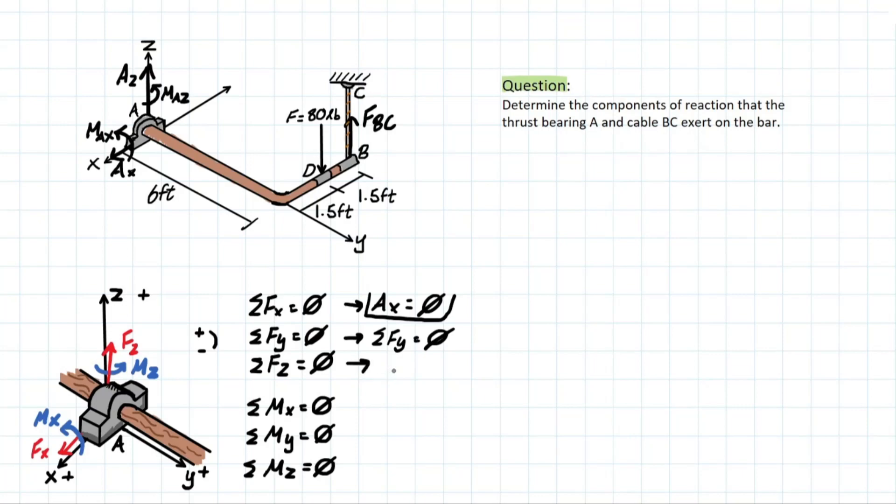Fz. Now we have a problem. We have three different z components. So that means that we're going to have to make this an equation to solve for later, right? We have Az in our positive direction, right? Here's our convention. We have negative 80 pounds. And we have FBC going upwards. So that's two unknowns. This will be equation one. We'll have to come back to it later.